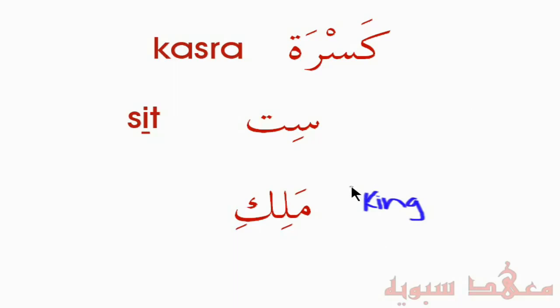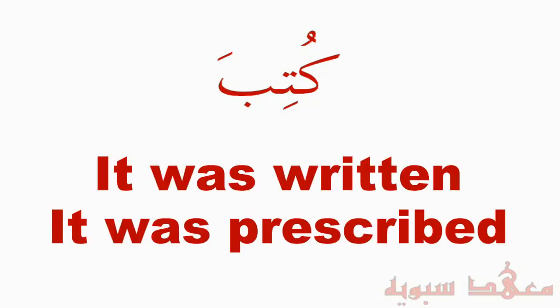Let's practice all three together. We have a word with the Kaf with a Dhamma — 'Ku' — then the Ta with a Kasra — 'Ti' — then the Ba with a Fatha — 'Ba.' Together: Kutiba. 'Kutiba' means 'it was written' or 'it was prescribed.'